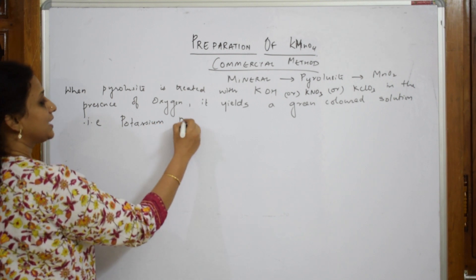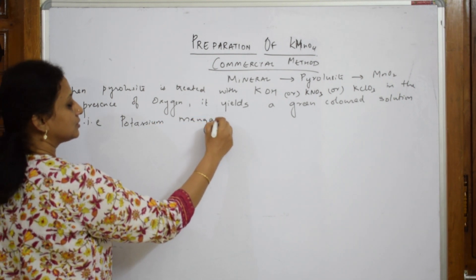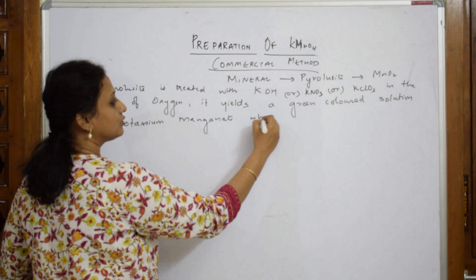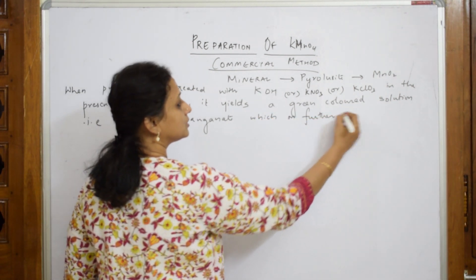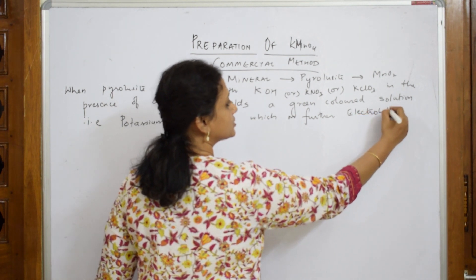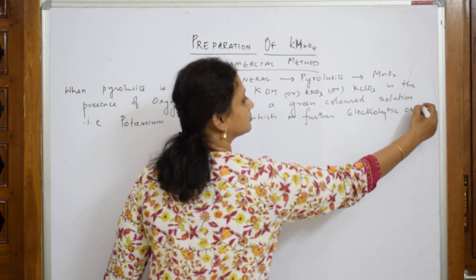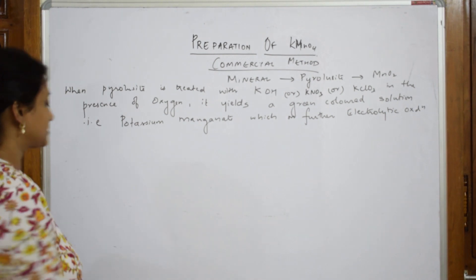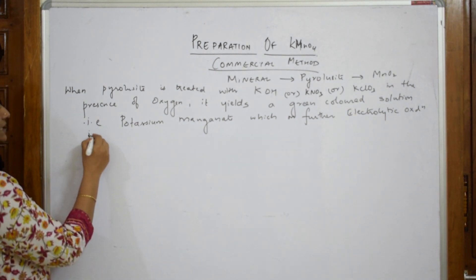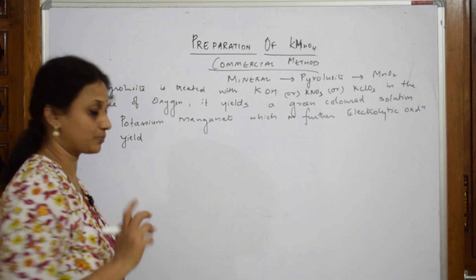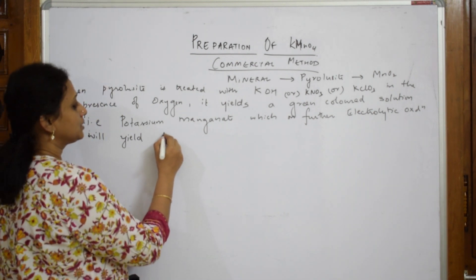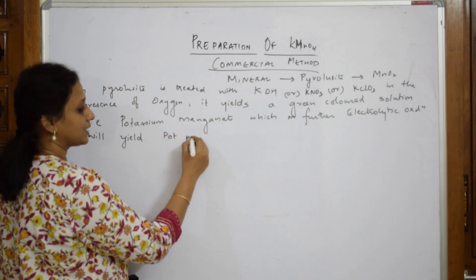That green colored solution is potassium manganate, which on further electrolytic oxidation will yield or will produce three important products: potassium permanganate, and hydrogen gas.